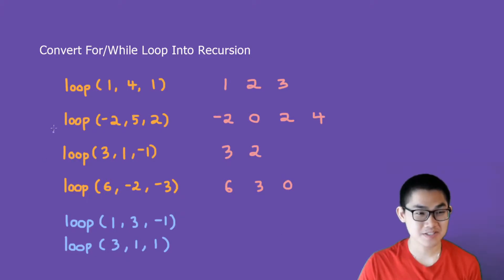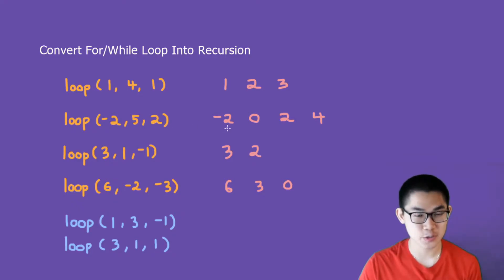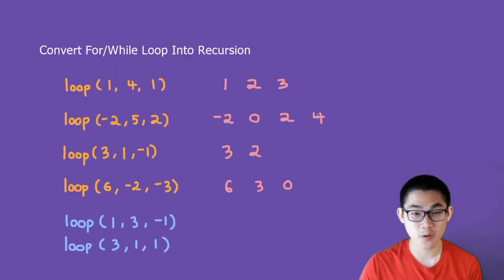How about this one? If we have negative 2, 5, and 2, it means we start at minus 2 and then we plus 2 every time we go up. So minus 2 goes to 0, it goes to number 2, and then it goes to number 4. And if we plus 4 and 2, it will be 6. But 6 is larger than 5, so we don't do anything here and we stop at this point.